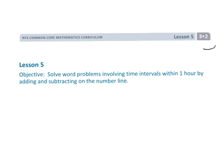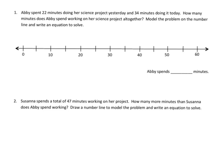All right, this is Grade 3 Module 2 Lesson 5. It's a lot like Lesson 4 in that we're using a number line to answer some word problems about time and time intervals and elapsed time.